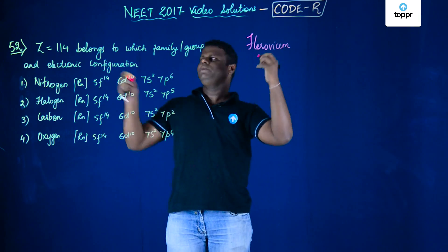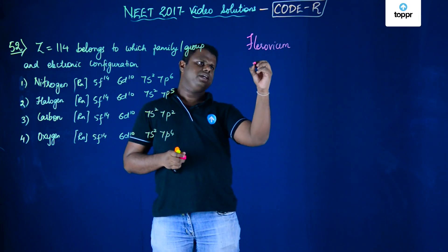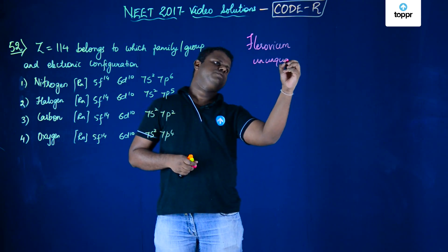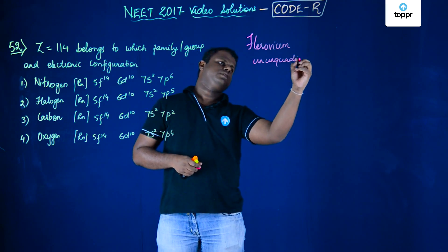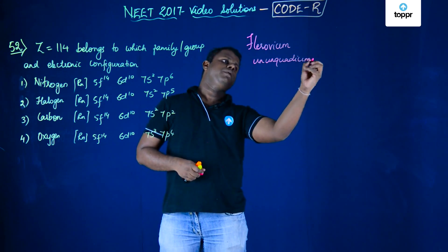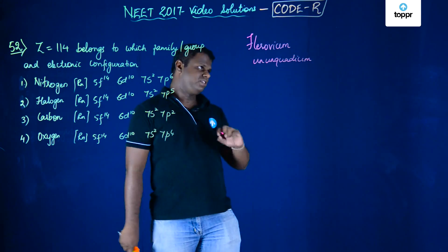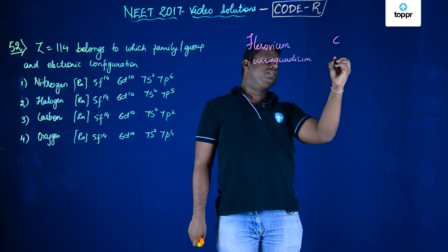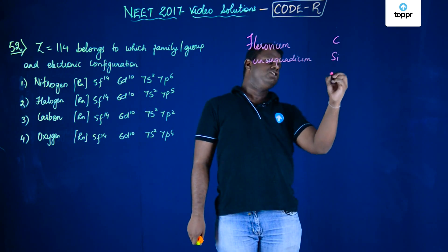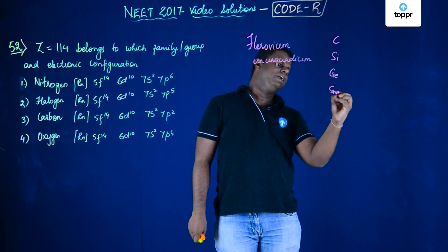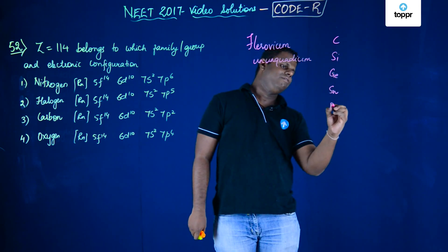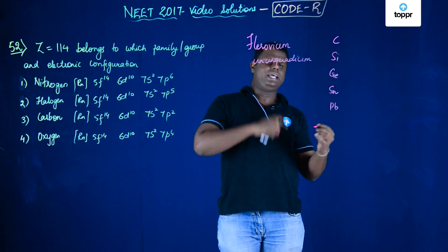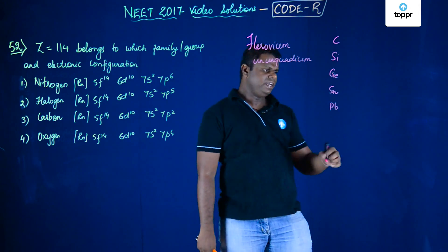The IUPAC name is Ununquadium and this element is placed below lead in the periodic table. So the sequence goes: carbon, silicon, germanium, tin, lead, and after lead this element is placed.